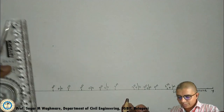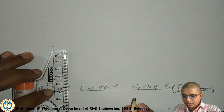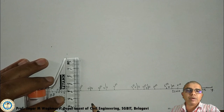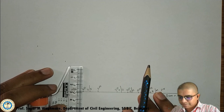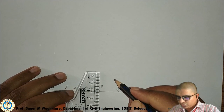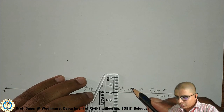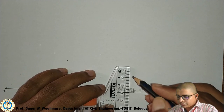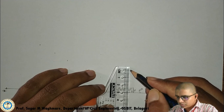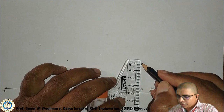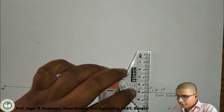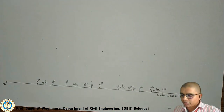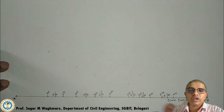Continuing to plot: same way 500, 400. Then 2 centimeters for value 200. Then again 200 — 2 centimeters. Then 300. Then again 400. Then again 500. Then again 600. All these points are now drawn.